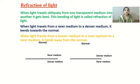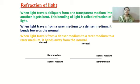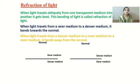There are two media for light to travel and for refraction to happen: one is rarer medium and one is denser medium. The medium in which the speed of light is faster is the rarer medium, and in the denser medium the speed of light is comparatively slow.